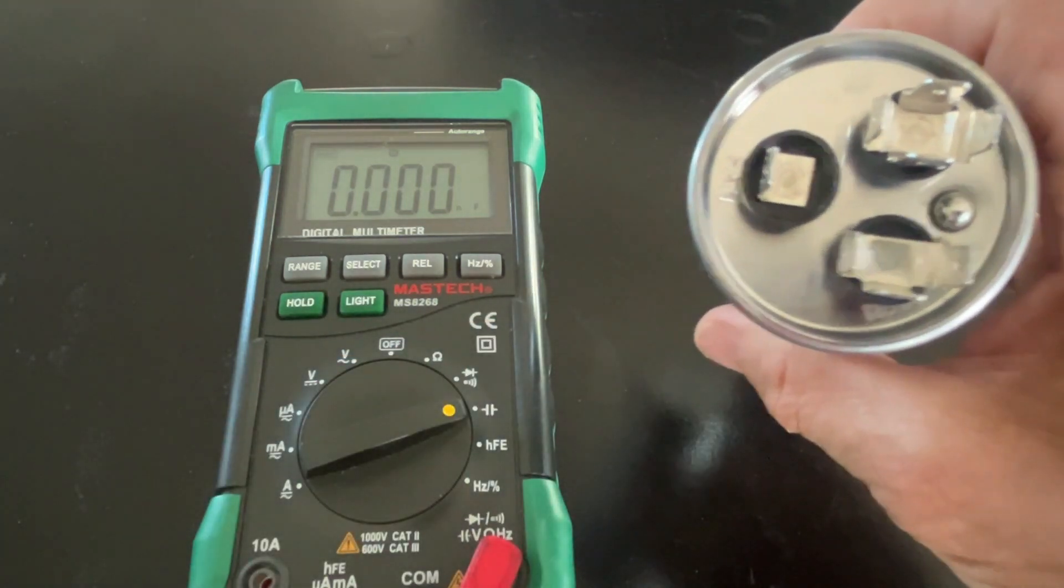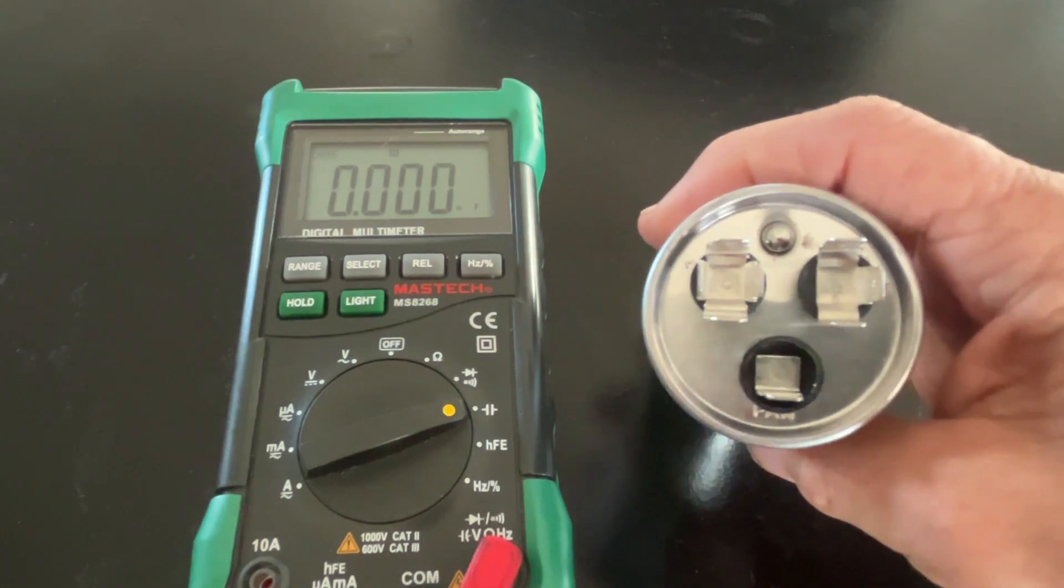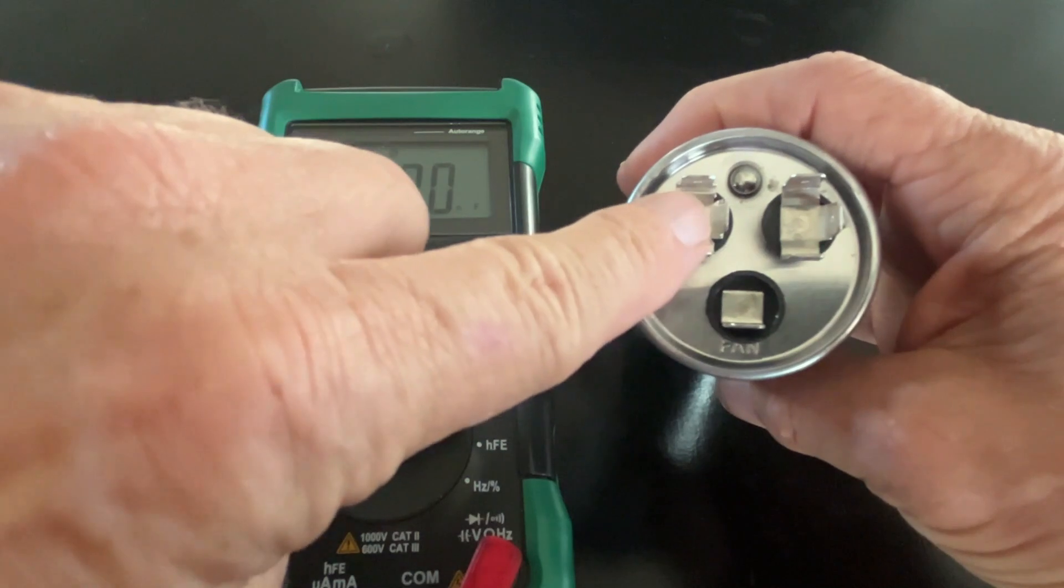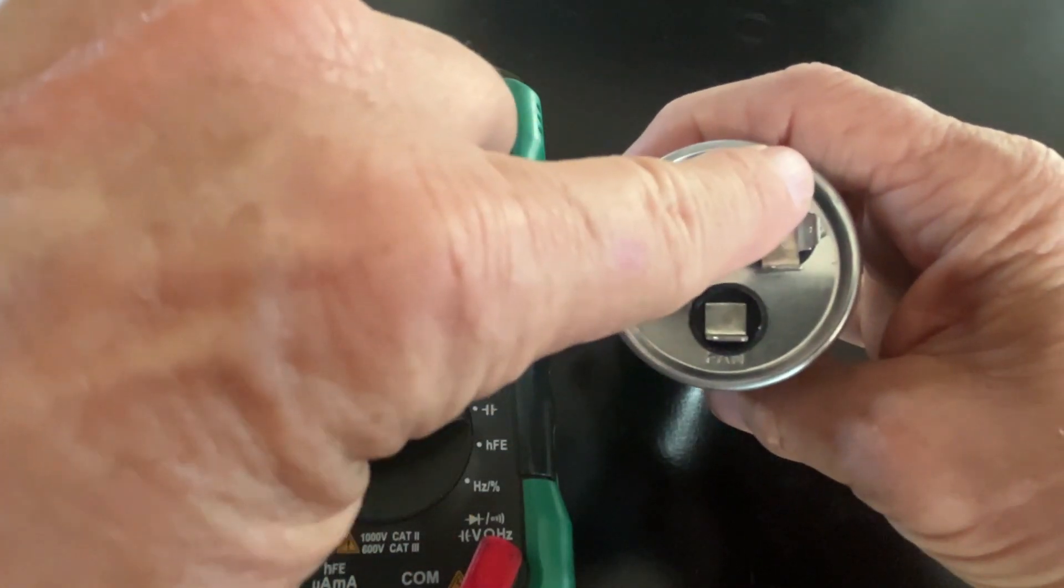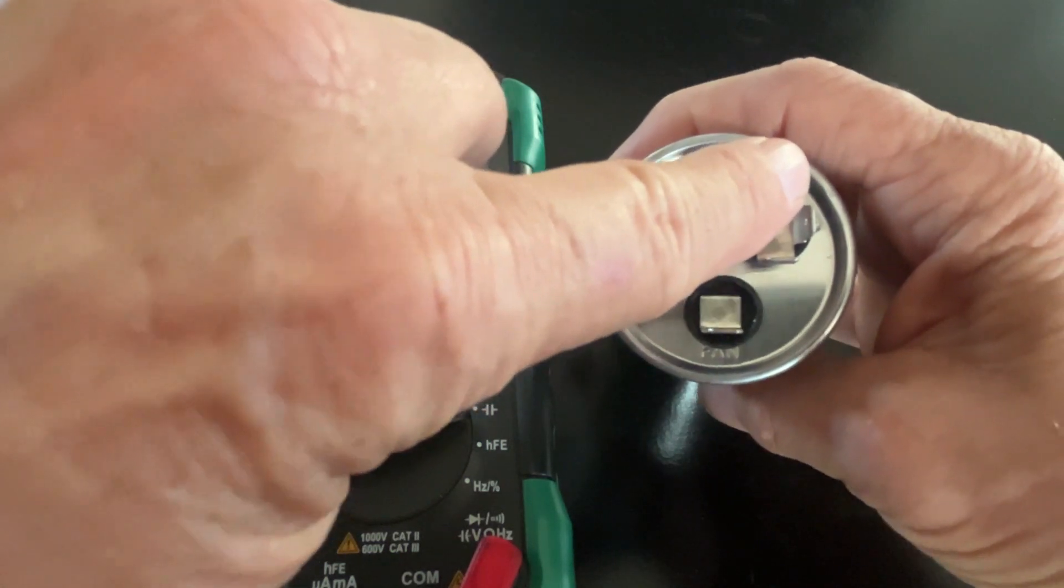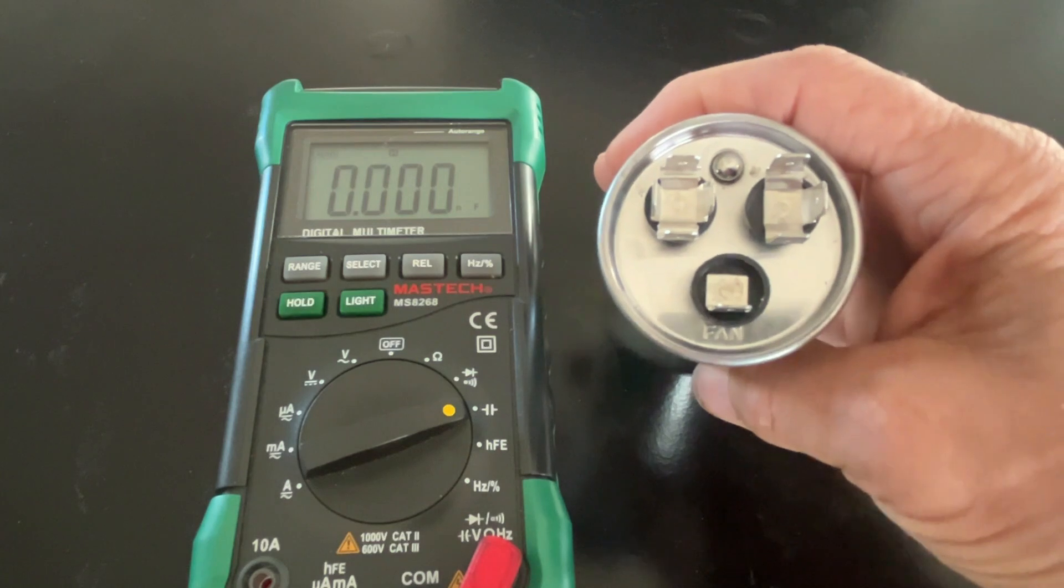Here's the C, so this is the common, this is the fan, and this says HERM, which stands for hermetic compressor. To measure or test this, you're going to measure from the common to the fan and from the common to the HERM. The HERM is going to be the higher value, so that should be 45, and from the common to the fan should read close to 5 microfarads.